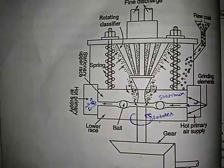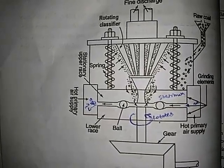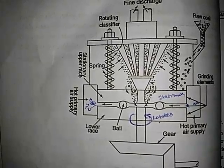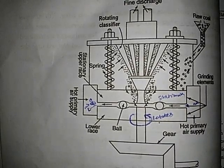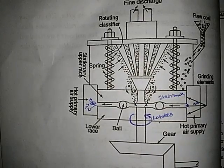In this video we are going to look at the ball and mill pulverizer. Pulverizers are usually used in thermal power plants to crush the coal from its original size to smaller size. Pulverizers are also known as crushers.